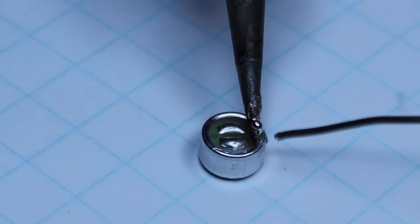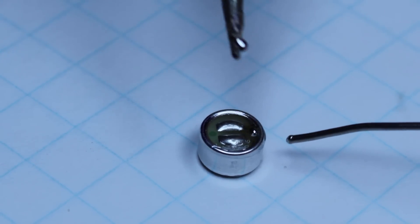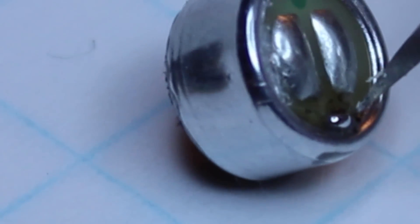With a very fine point soldering iron, tin the extra trace that connects to the aluminum case. The solder will not bond to the aluminum, it only bonds to the trace.